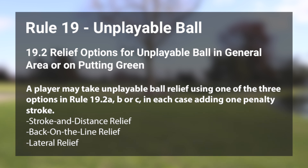You can also go back on the line relief, so you take an imaginary line from the hole back through your golf ball and drop as far back as you would like. Jordan Spieth famously did this at the Open Championship. And your last form of relief would be lateral relief, so you can have a two club length drop in either direction from the golf ball, no closer to the hole, and it must stay in the area of the course that you're at — so if you're in the general area, it must stay there.